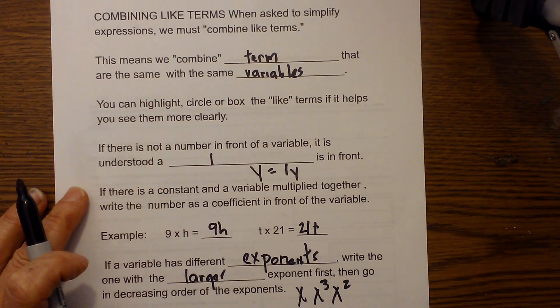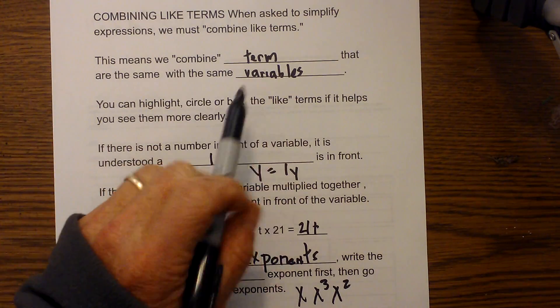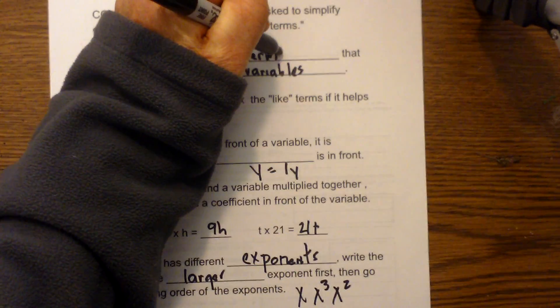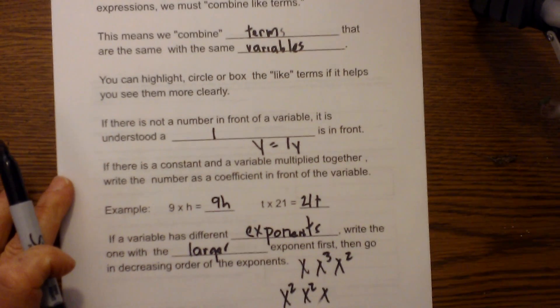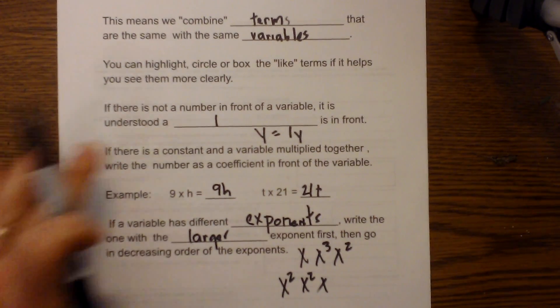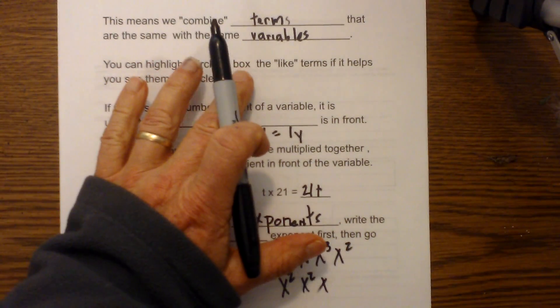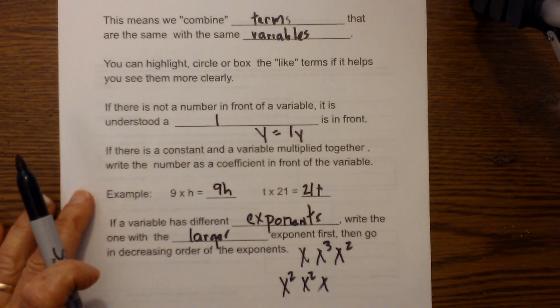First, let's talk about combining like terms. This means that we combine terms that are the same with the same variables. Another trick, you may want to highlight, circle, or even box the like terms to help you see it more clearly.